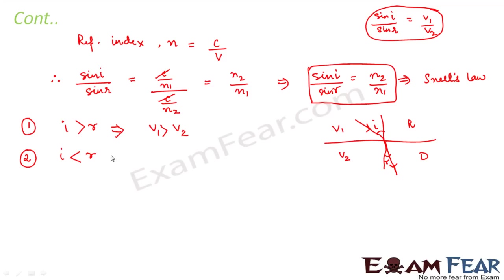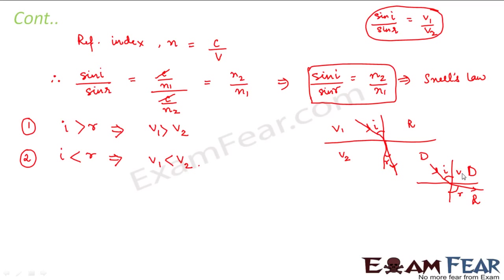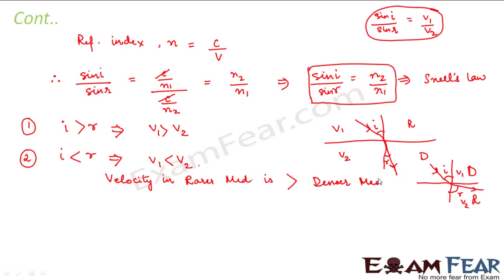Similarly, consider the scenario when I is less than R — the angle of incidence is less than the angle of refraction. This means the light ray is going from a denser medium to a rarer medium and bending away from the normal. In this case sin I will be less than sin R and therefore V1 will be less than V2. So the velocity in the denser medium is less than in the rarer medium. We conclude that velocity in the rarer medium is greater than in the denser medium.